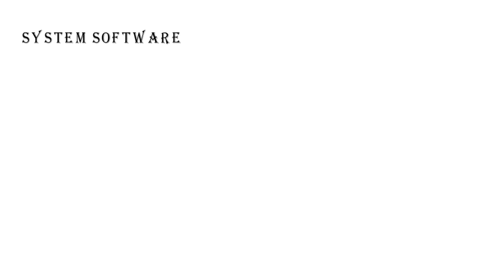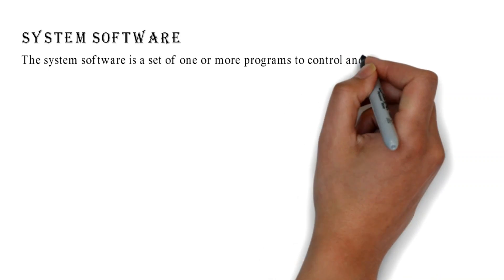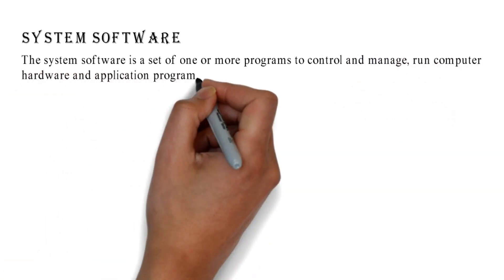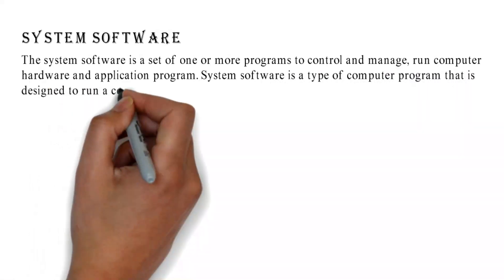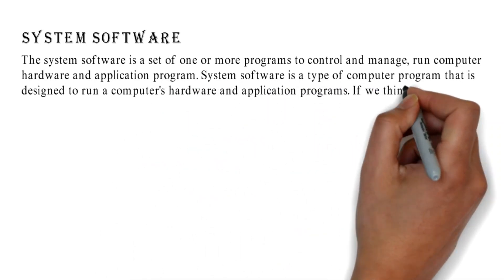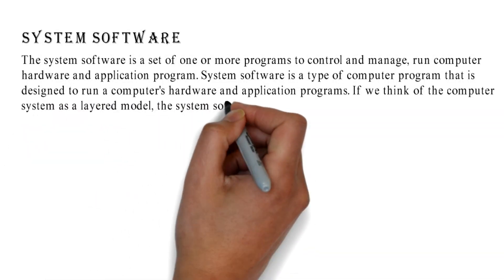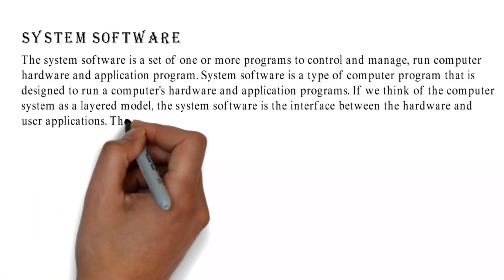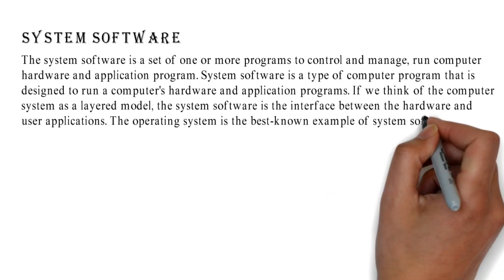System Software is a set of one or more programs to control, manage, and run computer hardware and application programs. It is a type of computer program designed to run a computer's hardware and application programs. If we think of the computer system as a layered model, the system software is the interface between the hardware and user applications.